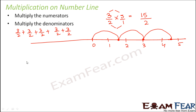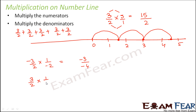In a similar way, let us perform some more multiplication. Let's say minus 3/2 multiplied by 1 over minus 2 — this gives minus 3 over minus 4. Similarly, 3/2 multiplied by 1 over minus 6: multiply the numerators which is 3, multiply the denominators which is minus 12, so this becomes 3 over minus 12. In this fashion you perform multiplication of rational numbers.